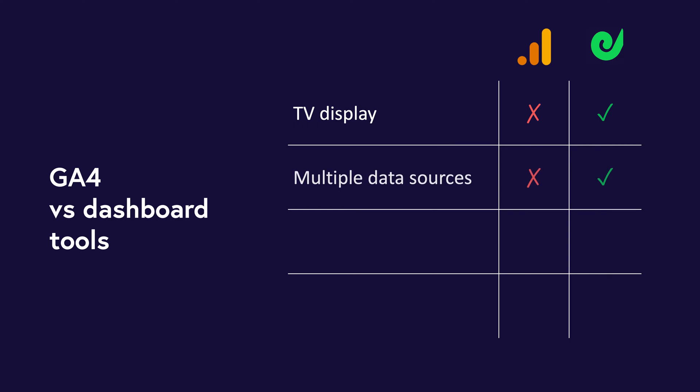Number two: when you want to display your GA4 metrics alongside metrics from other data sources. Most of the time, our business KPIs come from multiple data sources — Shopify, Salesforce, Zendesk — as well as website KPIs from Google Analytics. If we want to see all of our metrics in one place, we need a dashboard tool that integrates with all of the tools you use.